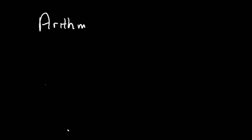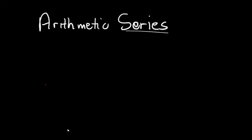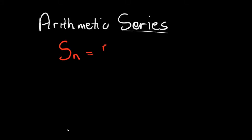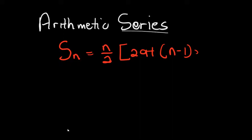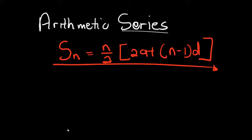Now we're going to focus on the arithmetic series. When we talk of a series, we're talking of things that follow each other. When dealing with arithmetic series, we're going to be using this formula: Sn equals n over 2 into 2a plus n minus 1 multiplied by d. This is the formula we'll be using in our arithmetic series problems.